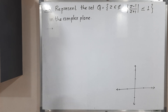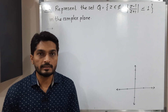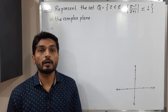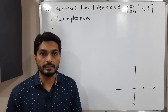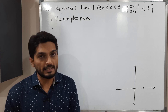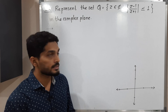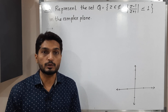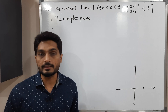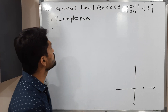Hi everyone, let us discuss this example. We have a set Q which is a subset of complex numbers, and we have to represent it in a complex plane. Q is the set of all complex numbers which satisfy the condition: mod of (Z minus 1) upon (Z plus 1) is less than or equal to 1.